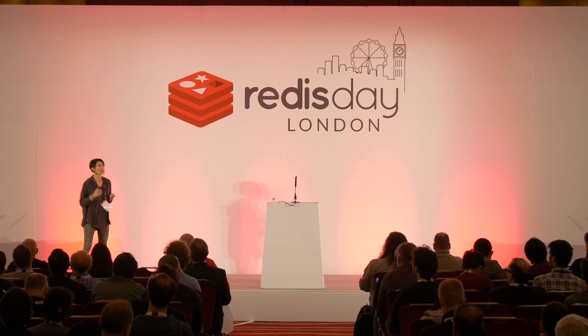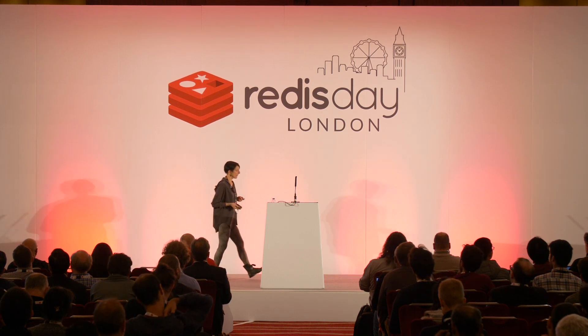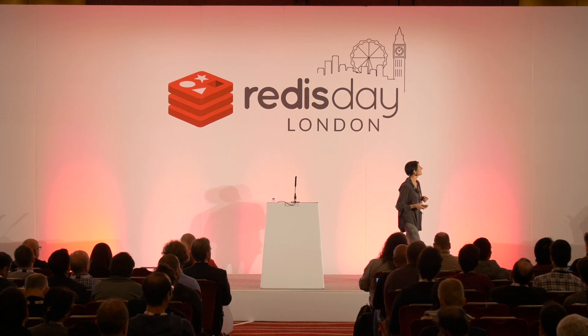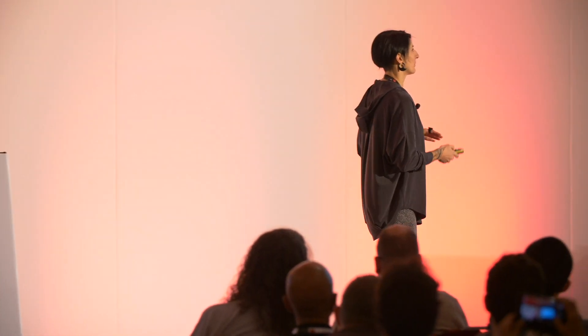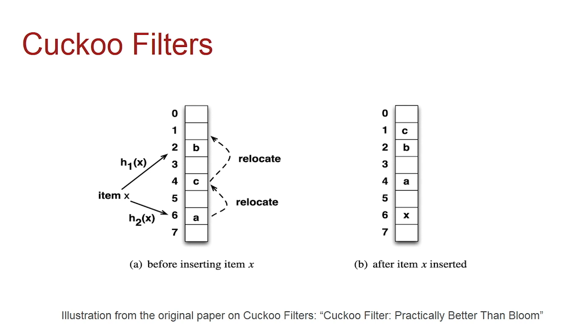Redis Bloom has some more probabilistic data structures implemented. One of them bears the name of a cuckoo bird. The cuckoo bird is a brood parasite — it lays eggs in other birds' nests, and the little cuckoos kick the other eggs out. The female even imitates a predator's cry to make the other bird go away. This filter takes this name because it uses two bit arrays and kicks elements out into different arrays. If you want to read about the implementation, I really recommend reading the original paper — it's relatively easy to read and understand.